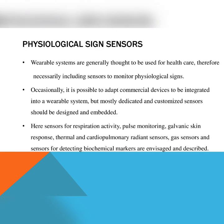The next topic is physiological sign sensors. Wearable systems are generally designed to be used for healthcare; therefore, it is necessary to include sensors to monitor physiological signs. Occasionally, it is possible to adopt commercial devices to be integrated into a wearable system, but mostly dedicated and customized sensors should be designed and embedded. Sensors for respiration activity, pulse monitoring, galvanic skin response, thermal and cardiopulmonary radiant sensors, gas sensors, and sensors for detecting biochemical markers are described.